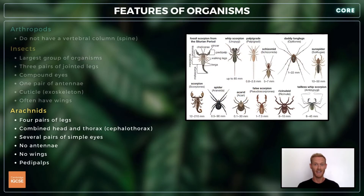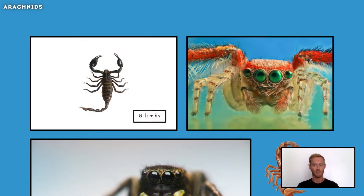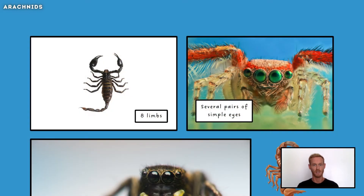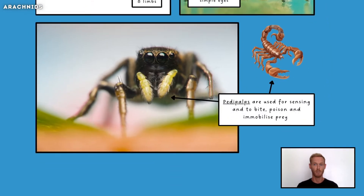Arachnids are a class of eight-legged arthropods that include spiders, scorpions, mites and ticks. Their bodies are divided into two regions: a combined head and thorax region called the cephalothorax, and an abdomen. They have several pairs of simple eyes, four pairs of limbs, and two pairs of pedipalps which are used in reproduction and to bite, poison and immobilize prey.